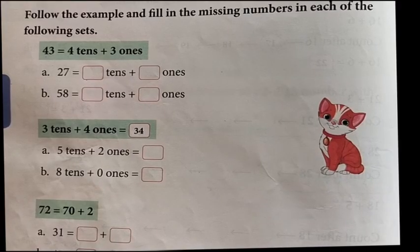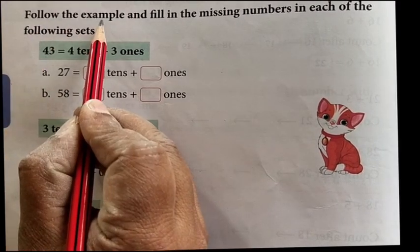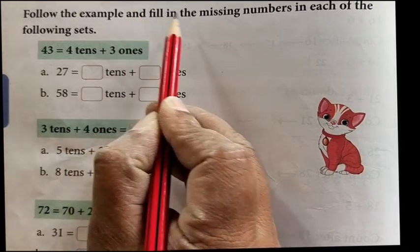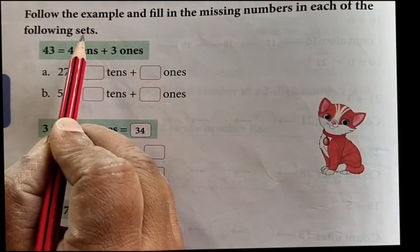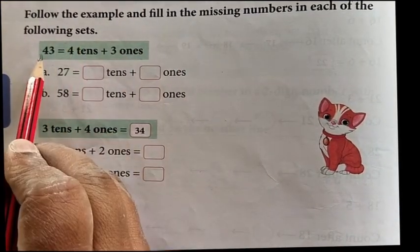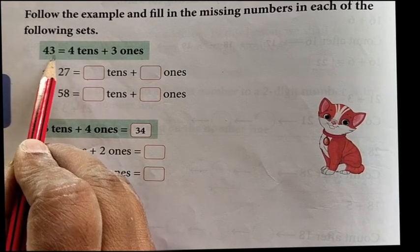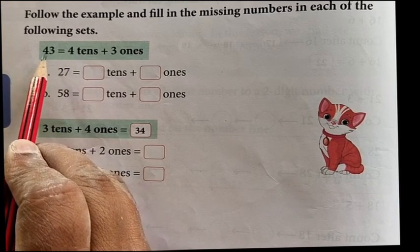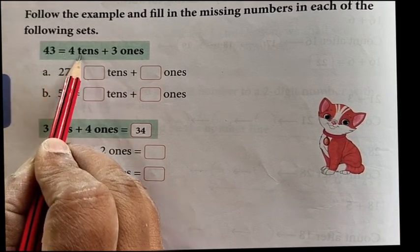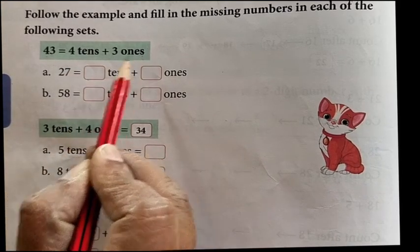Now we are moving to our exercise part. Follow the example and fill in the missing numbers in each of the following sets. Here, 43 is equal to 4 tens plus 3 ones.